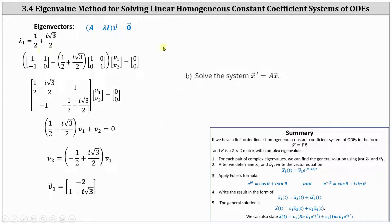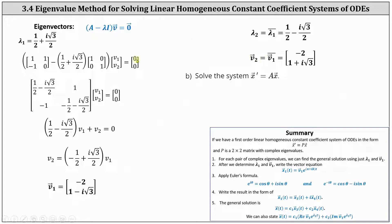Now we move to lambda sub two. Remember, lambda sub two is the complex conjugate of lambda sub one, where lambda sub one is one half plus i square root three divided by two, and lambda sub two is one half minus i square root three divided by two. We can determine the corresponding eigenvector v two by taking the complex conjugate of each entry of vector v one. The complex conjugate of negative two is negative two, and the complex conjugate of one minus i square root three is one plus i square root three. Now we have the corresponding eigenvector v two for lambda sub two.